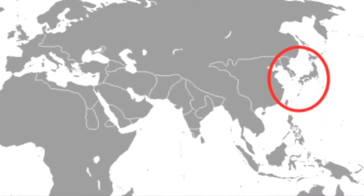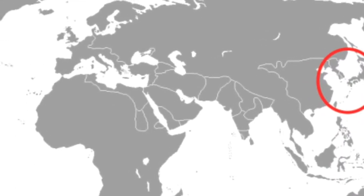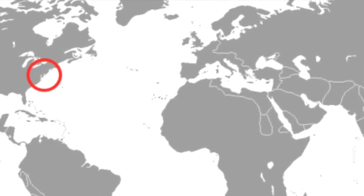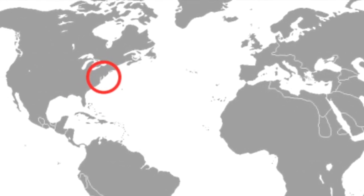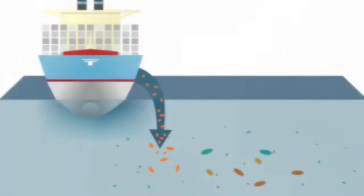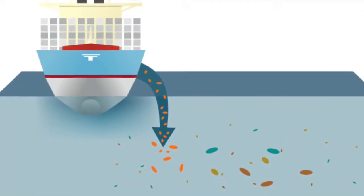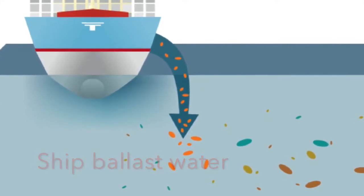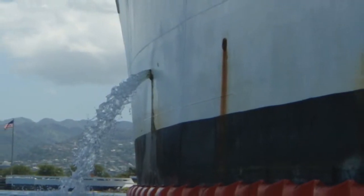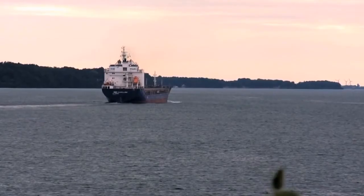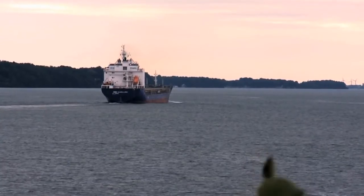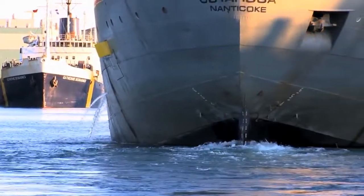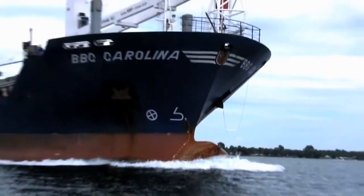Although the Asian shore crab is native to the western shore of the Pacific Ocean, it has become well established on the east coast of the United States over the course of the last 25 years. Hypotheses speculate that the crab's larvae were brought over through ship ballast water. Many big ships take in ballast water when traveling to weigh the ship down before expelling the water in a different area. This causes new species to be introduced to new habitats and ecosystems.